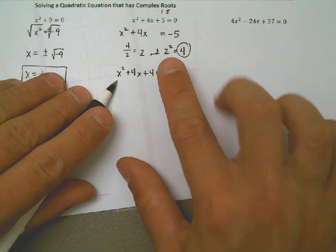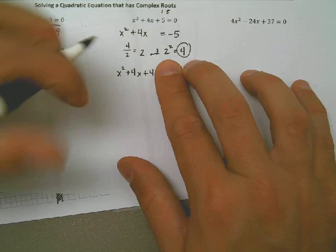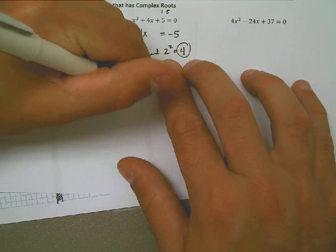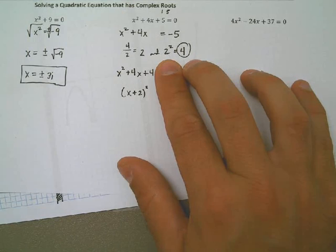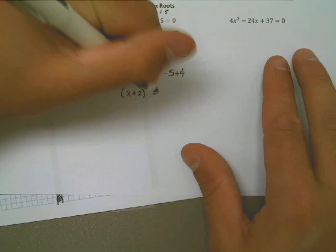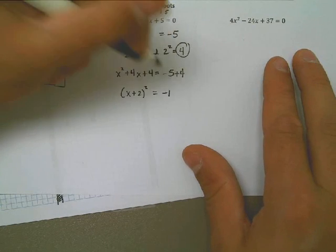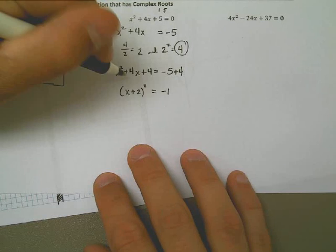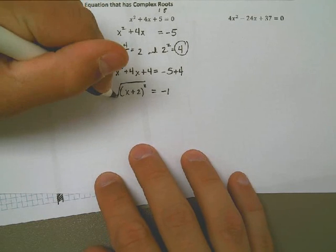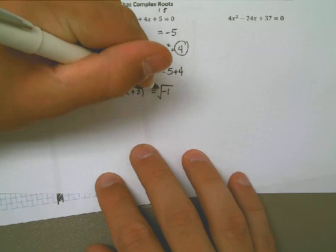Now, to get rid of the square, square root of both sides. Don't forget the plus and minus. And on the left, I have just the x plus 2, because the square root and the square cancel each other out. On the right-hand side, I have plus or minus the square root of negative 1, which we know is i.